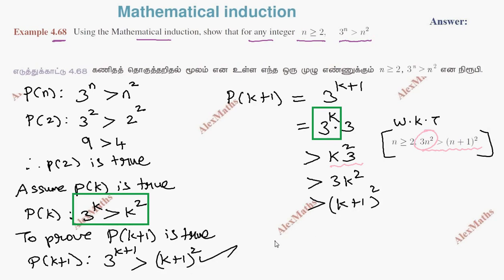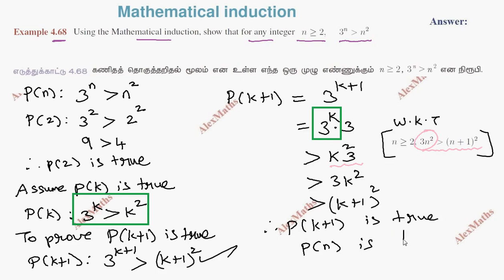Therefore, 3 power k plus 1 is greater than k plus 1 whole squared. So P of k plus 1 is true. Hence, P of n is true for all n greater than or equal to 2.